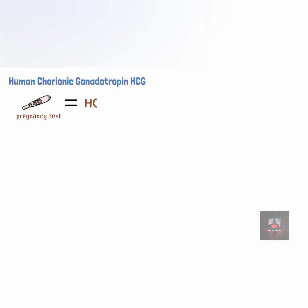Detection of human chorionic gonadotropin (HCG) in the mother's serum and urine is generally used to diagnose pregnancy. It is a glycoprotein made by the trophoblast. It is composed of two subunits, the alpha and beta subunits. The alpha subunit is similar in structure to hormones such as luteinizing hormone, follicle stimulating hormone, and thyroid stimulating hormone. However, the beta subunits are unique in structure. Thus, the urine and serum pregnancy tests are based on antibodies specific to the beta subunit of the HCG, also known as the beta-HCG test.